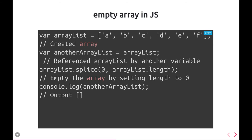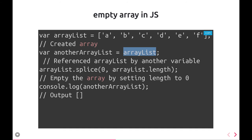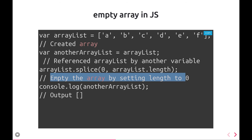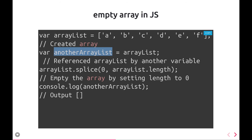That same splice method can also be used to make an empty array. We do arraylist.splice(0, arraylist.length), which empties the array by removing all elements. Splice is one of the important functions in Array.prototype — it can create a duplicate array or create an empty array. What we did was assign the reference of arraylist to another arraylist and then create the empty array.